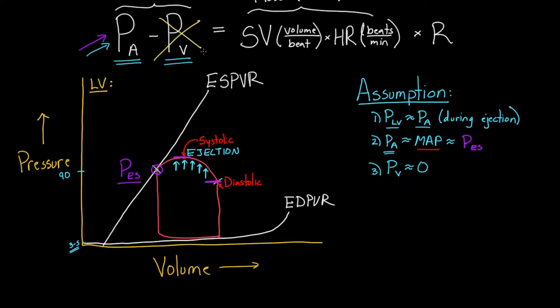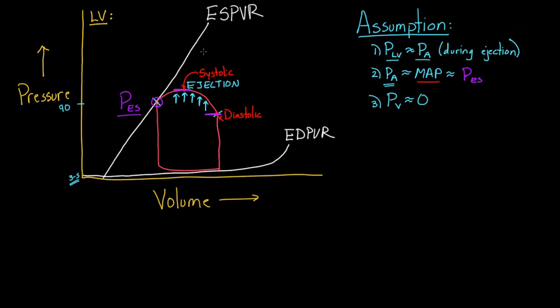So let's use these assumptions. And I'm going to rewrite that equation now. And so our equation rewritten would be something like this. It would say, we have pressure at the end of systole minus zero, so I'm going to leave that away, equals stroke volume times heart rate times resistance. And I'm going to go ahead and divide both sides of the equation by stroke volume. And this cancels. So my final equation here, I'm going to write it in a different color so it's nice and bold for you. My final equation is the end systolic pressure divided by stroke volume equals heart rate times resistance.